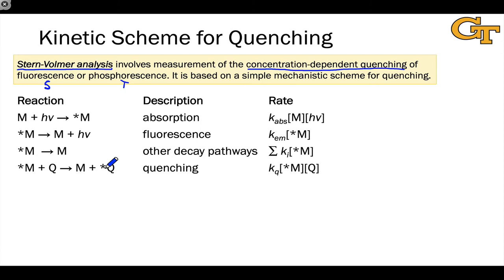M* can engage in fluorescence — here we're focusing on fluorescent Stern-Volmer analysis, though phosphorescence Stern-Volmer is not much more complicated; we simply incorporate ISC. For a singlet state, it can fluoresce, engage in other unimolecular decay pathways such as internal conversion or inter-system crossing, or it can be quenched. Quenching involves a bimolecular reaction of M* with Q to form M and Q*.